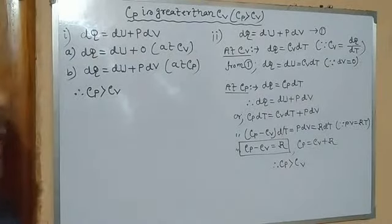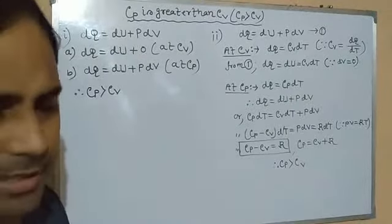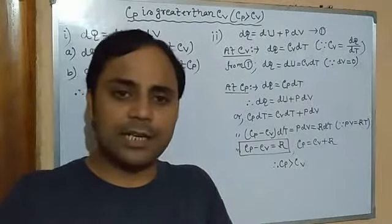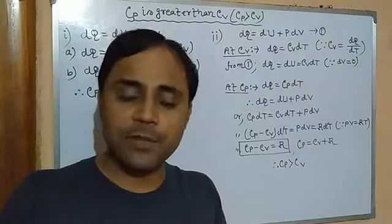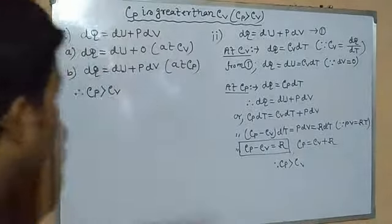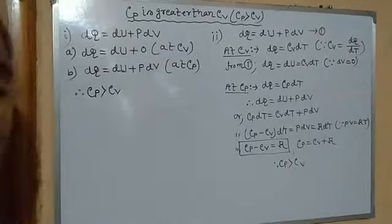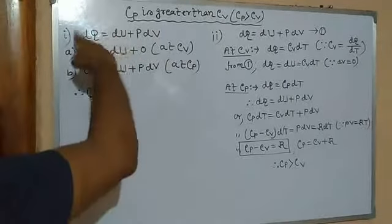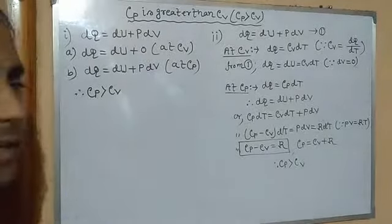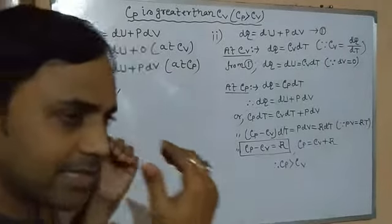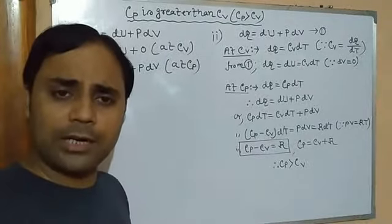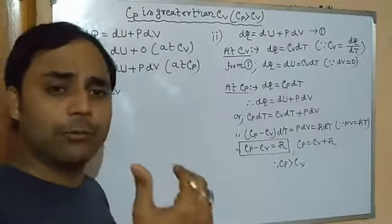According to the first law of thermodynamics, when a gas is heated, some part of the heat is used to increase its internal energy — that is, to increase its temperature — and the rest is utilized to do work against external pressure. The expression is DQ = Du + PdV, where DQ is the total heat energy supplied, Du is the change in internal energy, and PdV is the work done by the gas.